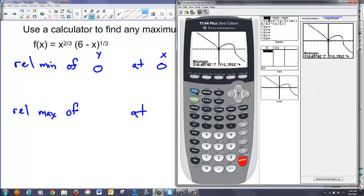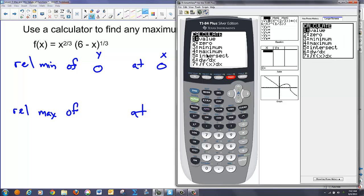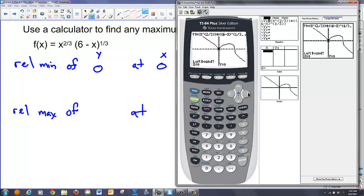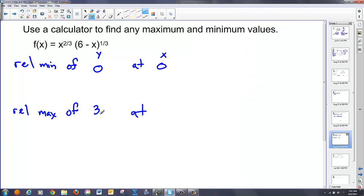Go back. Find our maximum. Second calculate. Go to the max. Anywhere left of that high point. And then we go anywhere right of the high point. Hit enter a third time. And it'll find the approximation of that. So we could probably say this is 4. So it occurs at 4 and it has a high value of 3.17. And there's our relative max and mins.